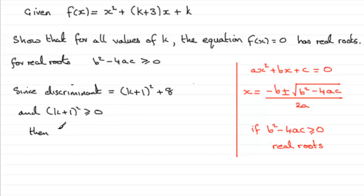then if we're obviously adding 8 to a positive value, then clearly (k+1)² + 8 must also be positive, greater than or equal to 0.